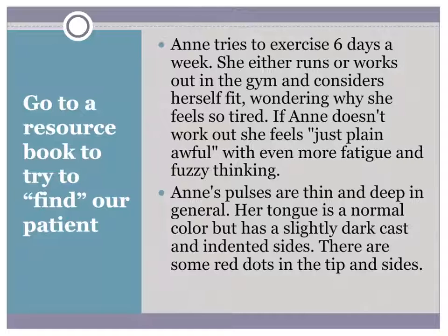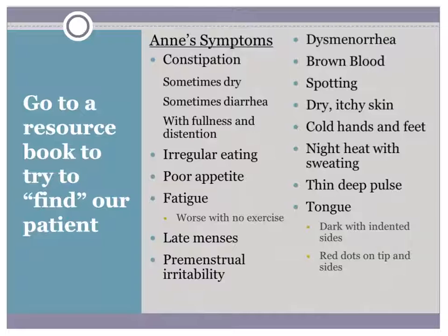Anne tends to have dry skin that gets itchy in the winter. Her hands and feet get very cold; in general she runs cold, though she occasionally has a night sweat where she wakes up hot, sweats, and then gets chilled. She tries to exercise six days a week — either running or the gym — and considers herself fit, wondering why she feels so tired. If she doesn't work out, she feels plain awful with more fatigue and fuzzy thinking. Anne's pulses are thin and deep in general. Her tongue is normal color but has a slightly dark cast and indented sides. There are some red dots on the tip and sides.